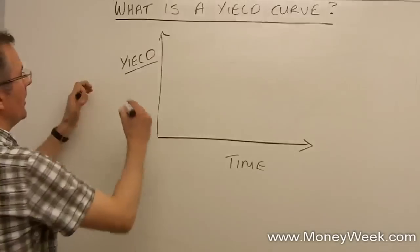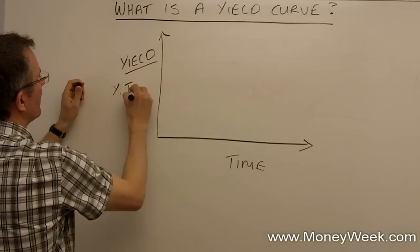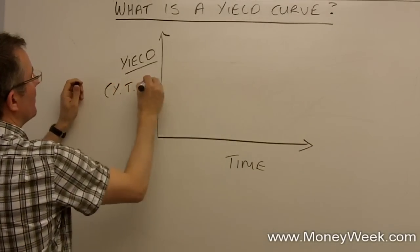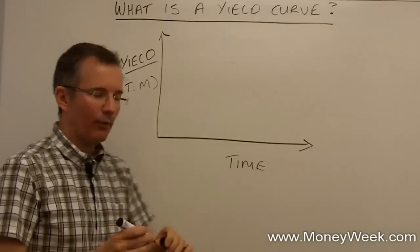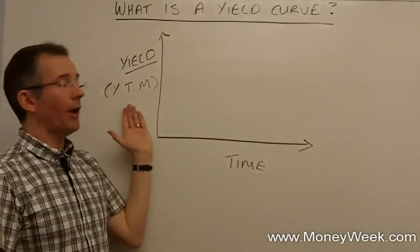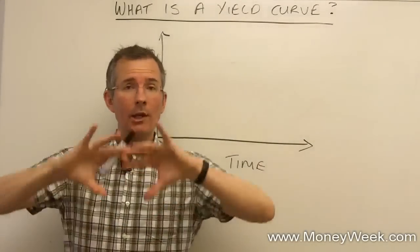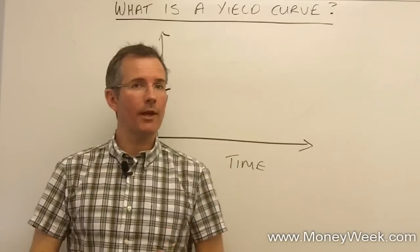Okay so yield is what I'll call yield to maturity. Sadly in financial markets nothing has one name where two will do. So this one is also known as the gross redemption yield. So you might see it flagged up as GRY. But anyway we're looking at the total yield not just the income yield.